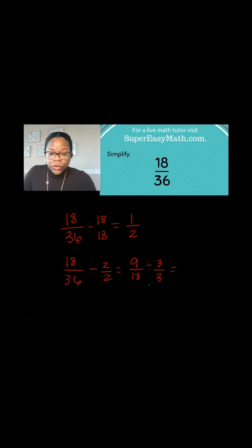Then after looking at that, you can say, oh well, 3 can go into both. So 9 divided by 3 is 3, and 18 divided by 3 is 6. And then I can see that 3 can go into both of those. So then I know that it's 1 half again.